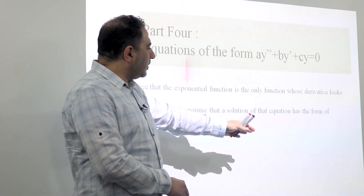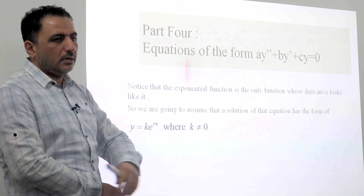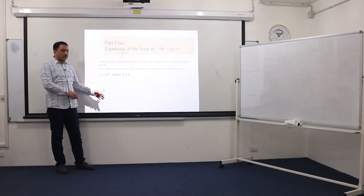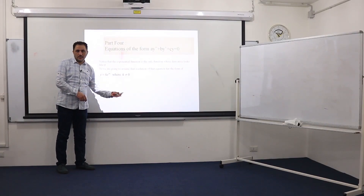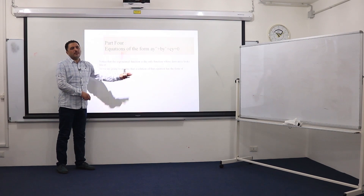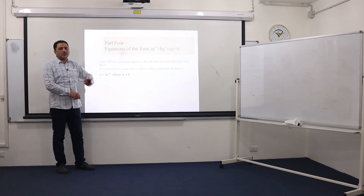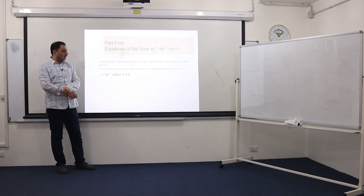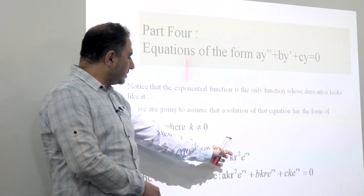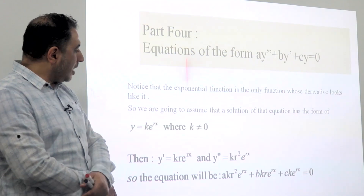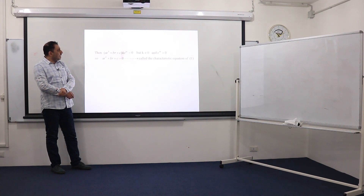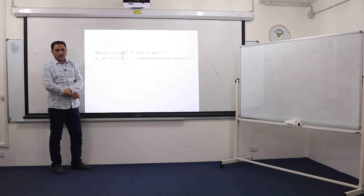I'm going to give you a hint about how we get the formula — it is not required from you to prove it every time. Whenever you reach the formula, apply it directly without any proof. As a result, y' = kre^(rx) and y'' = kr²e^(rx). Replacing y', y'', and y in the differential equation, we get this expression. We may take ke^(rx) as a common factor.